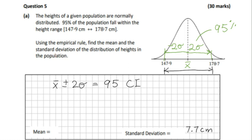The mean is the midpoint between the two values, so add them together. The formula for the standard deviation: four standard deviations equals the difference between 178.7 and 147.9. Just look at the chart.